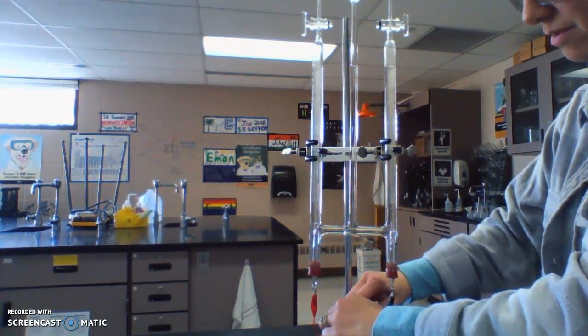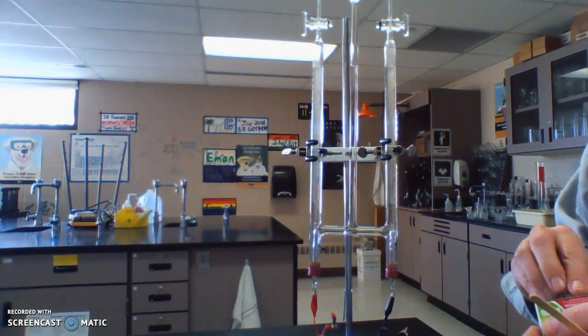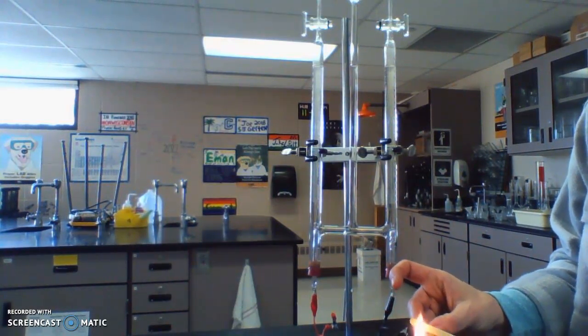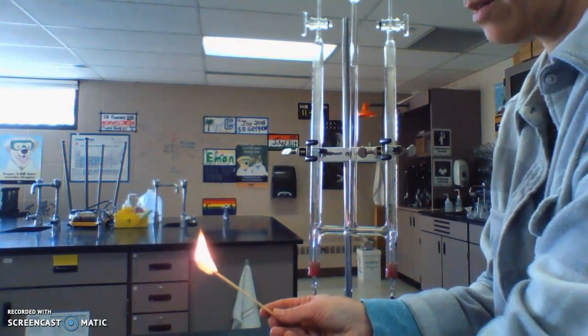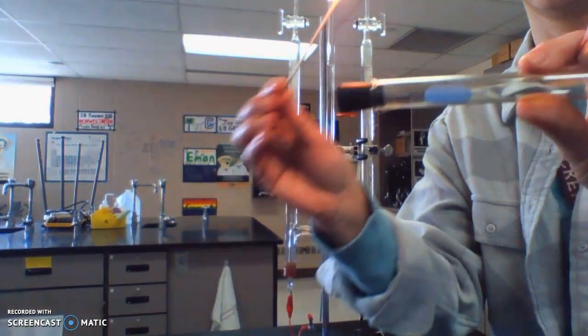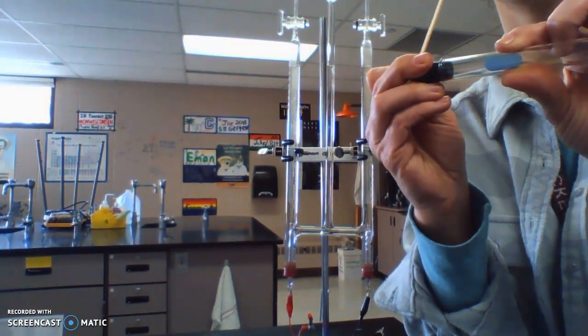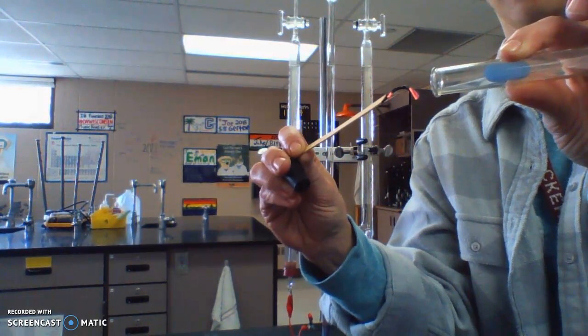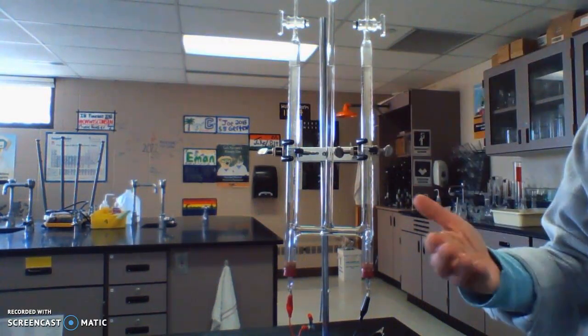For oxygen we're going to use what's called a glowing splint, because fire needs oxygen. We're going to see if a splint that has been blown out so it's just glowing will either glow brighter or possibly even reignite. I'm going to blow this out and then put it in the tube. There, it actually glowed brighter right there when I first put it in the oxygen. That is a positive test for oxygen.